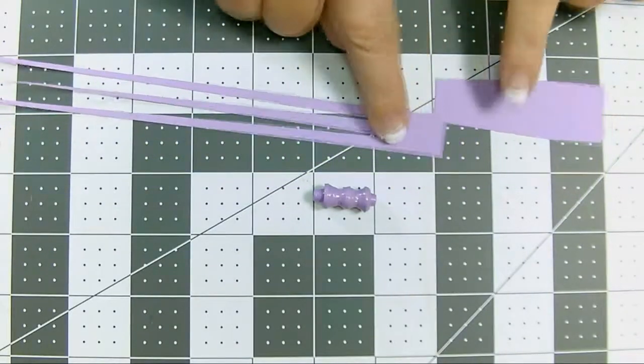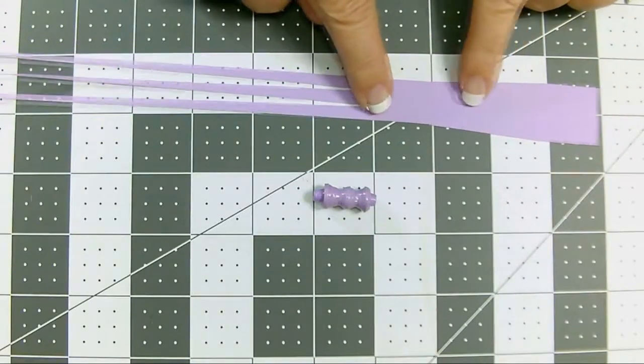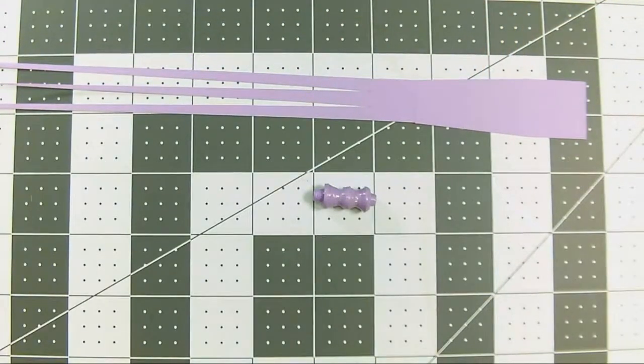Strip A and strip B will end up resting against each other as we roll. So, whatever proportions you decide to use for your strips, you need to make sure the bottom of strip A and the top of strip B are exactly the same width.